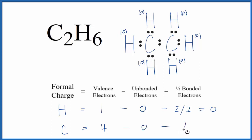And then we subtract one-half of the bonded valence electrons. We have 2, 4, 6, 8. 4 minus 0 minus 4 equals 0. So the formal charge on this carbon is 0.